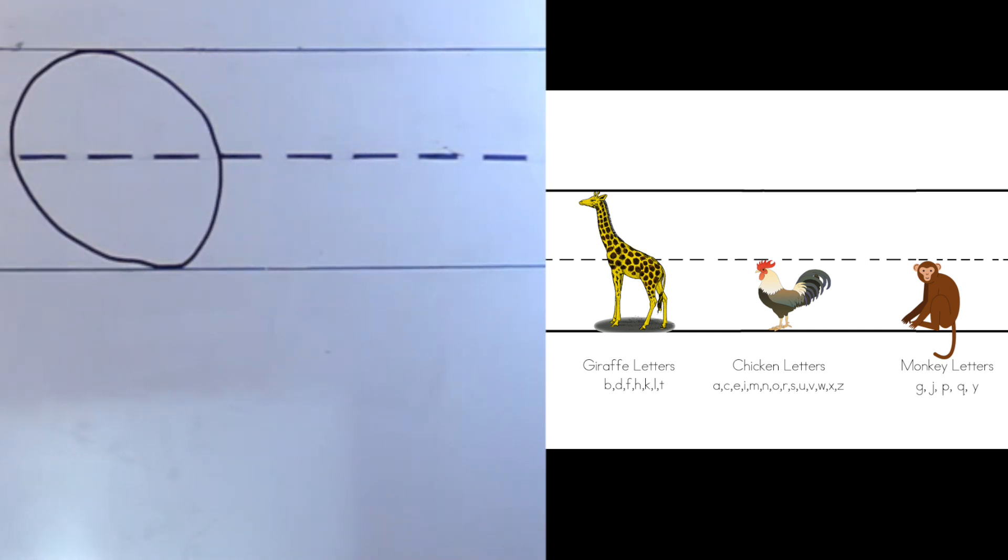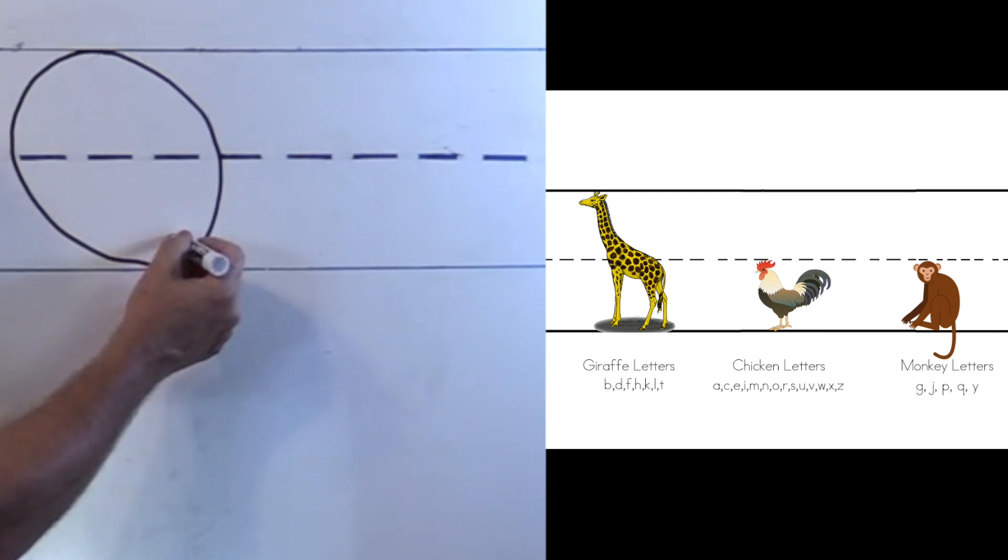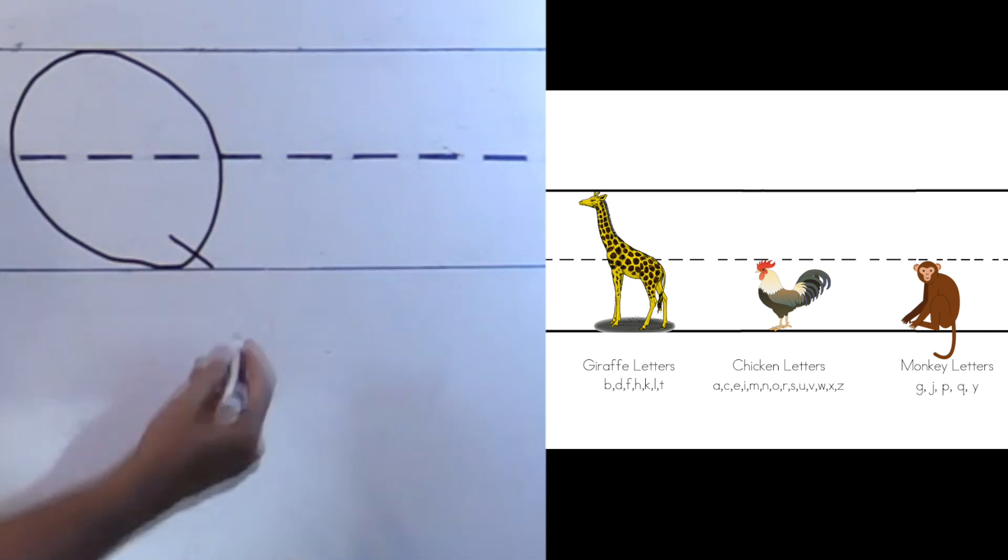And then I stop when I get to the top. That looks just like the letter O. And then what makes it different is I come right here and I make a diagonal line down to the bottom. And there is our uppercase Q.